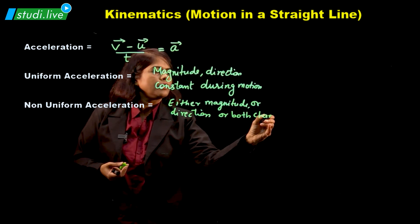As I told you, we require direction also — that means magnitude as well as direction. So definitely velocity is a vector quantity.